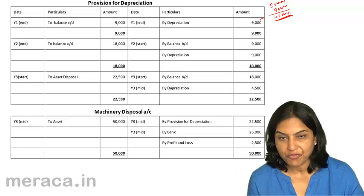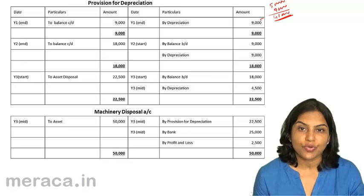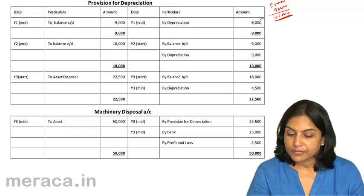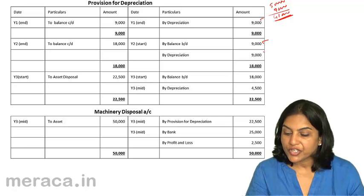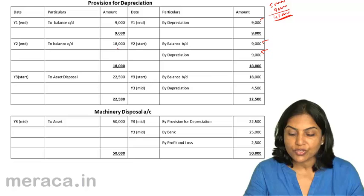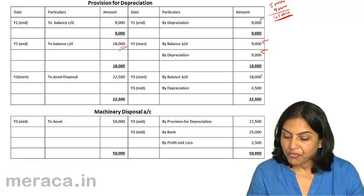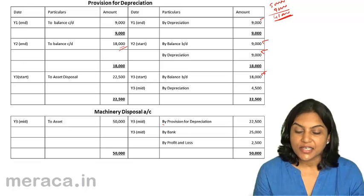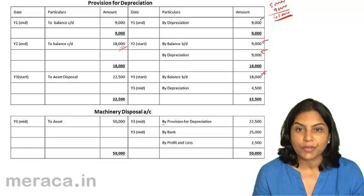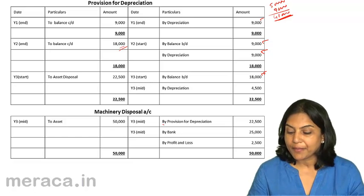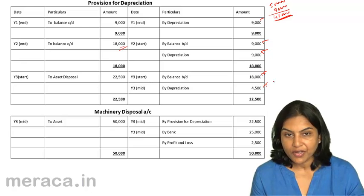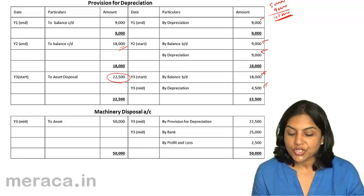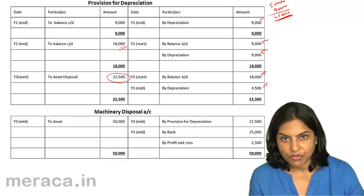However, as the asset continues to be shown at 50,000, the credit goes to the provision for depreciation account. The 18,000 balance is brought forward at the beginning of year 3. In the middle of year 3, the asset is sold, so depreciation up to the middle of year 3 needs to be charged — by depreciation, the amount is 4,500. Therefore, we have a total accumulated depreciation of 22,500, which is then transferred to the machinery disposal account.